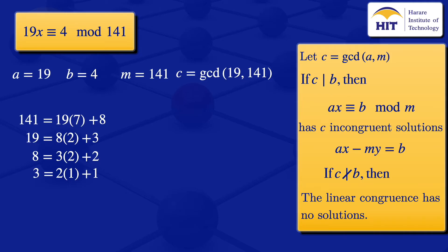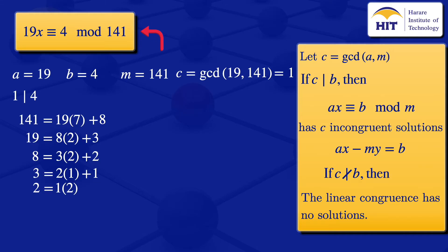Then 2 = 1 × 2 + 0, so the remainder is 0. The Euclidean algorithm says the greatest common divisor is the last non-zero remainder, which is 1. So c = gcd(19, 141) = 1. We now check if c divides b: does 1 divide 4? Yes, so this linear congruence has one incongruent solution.